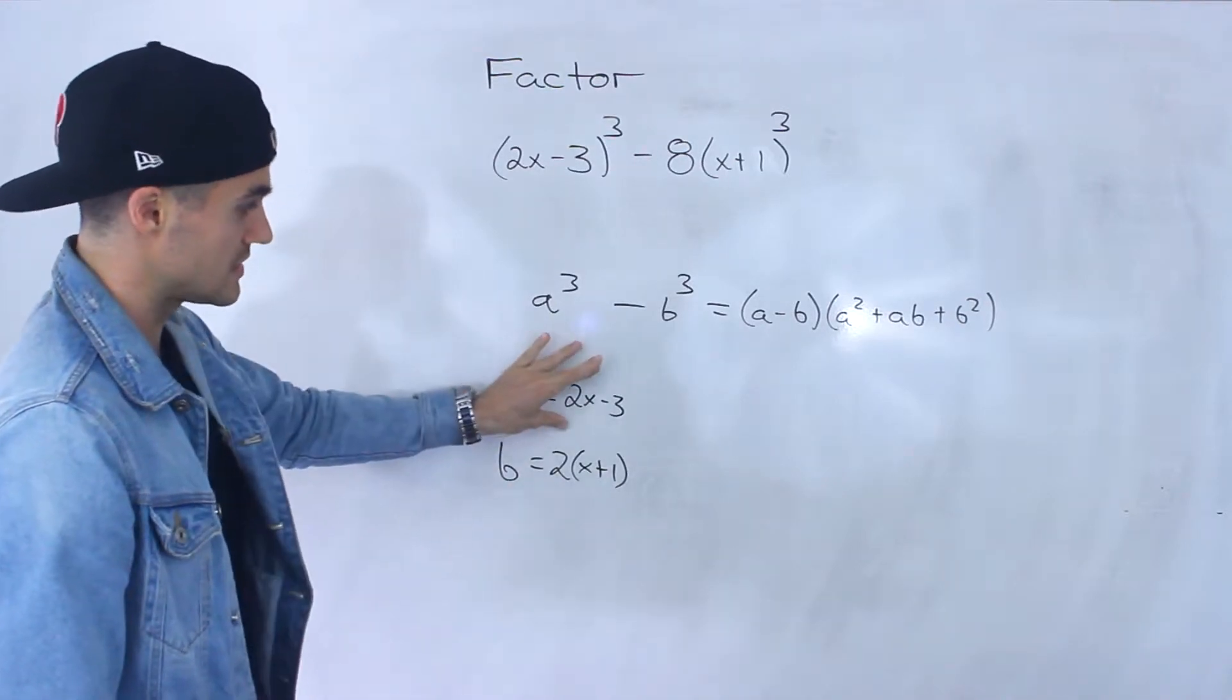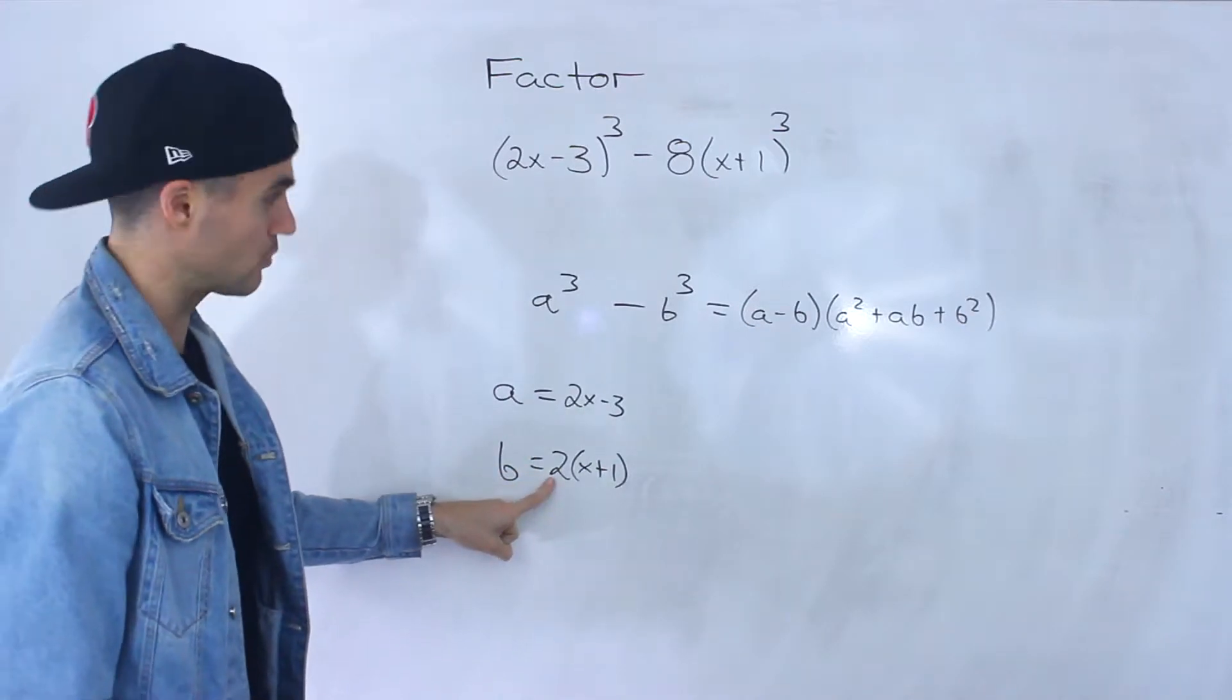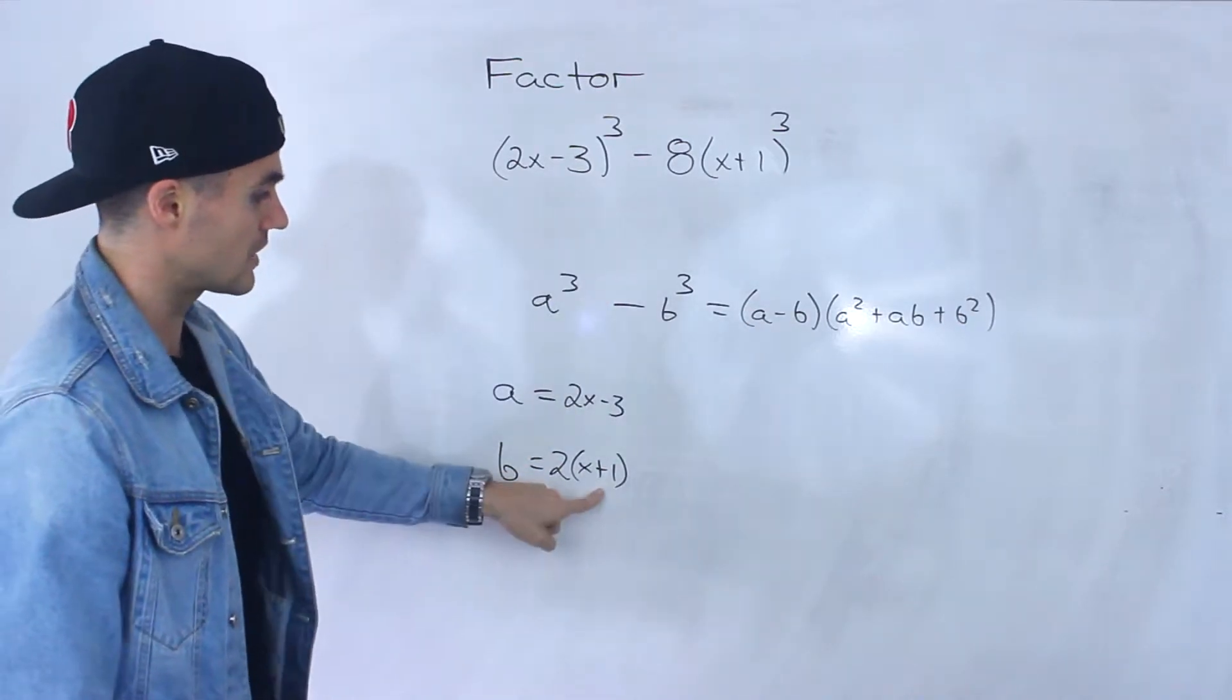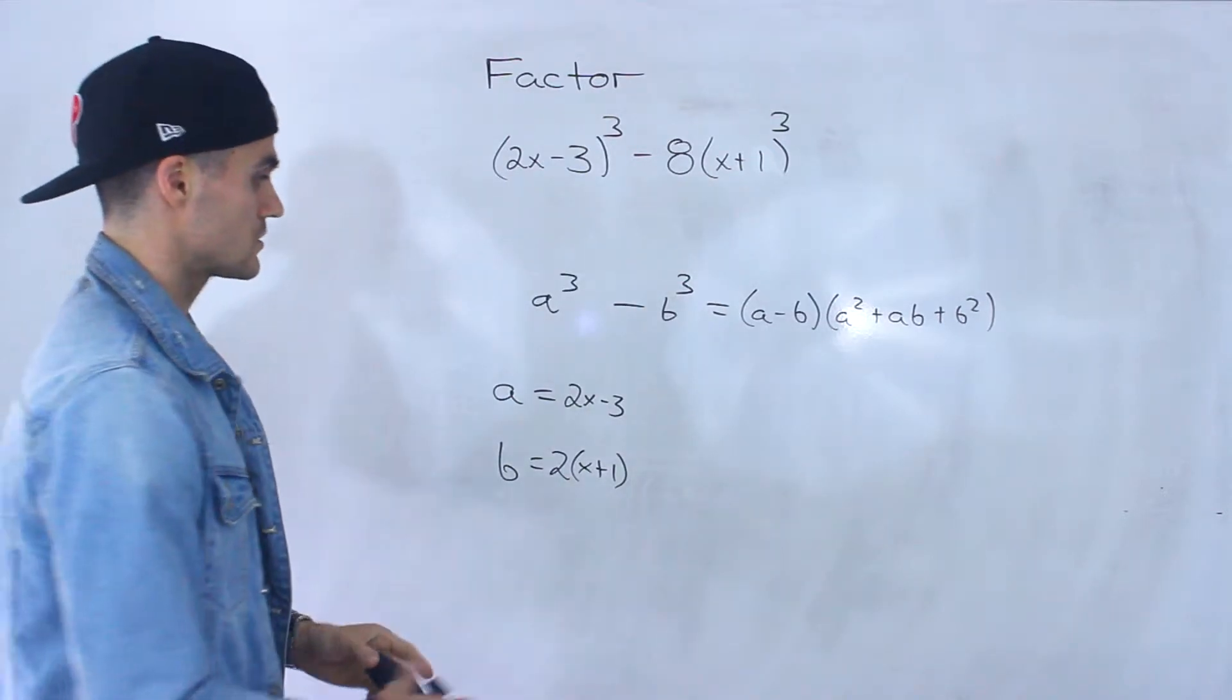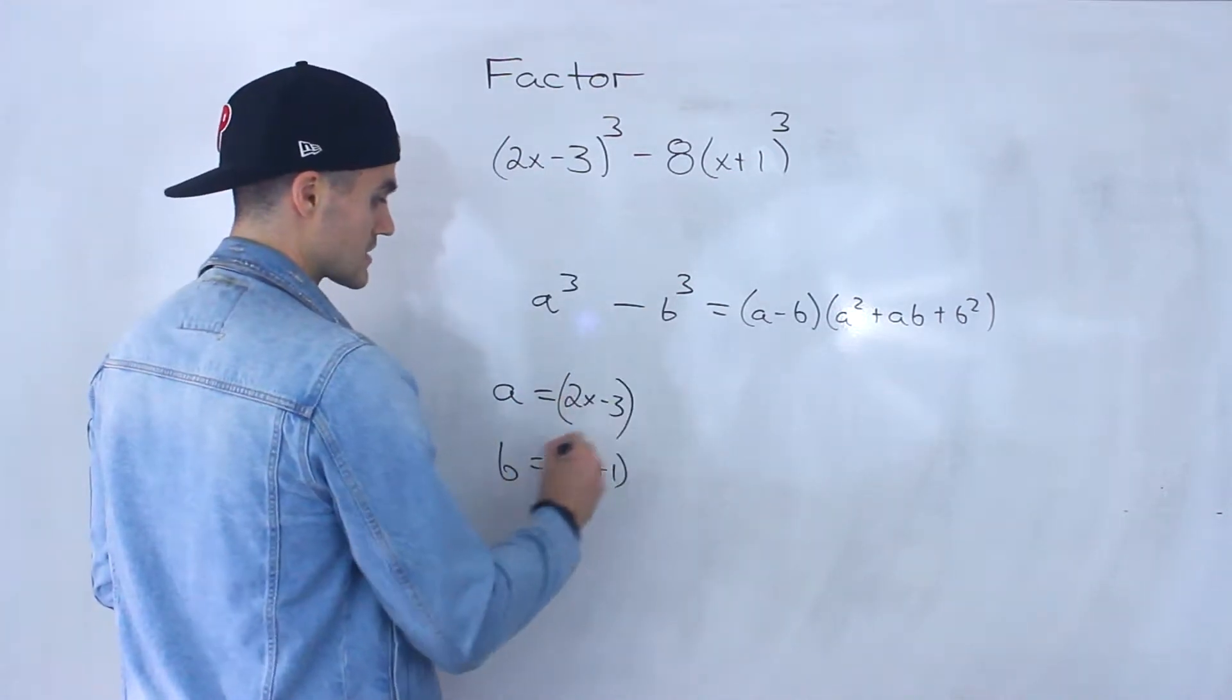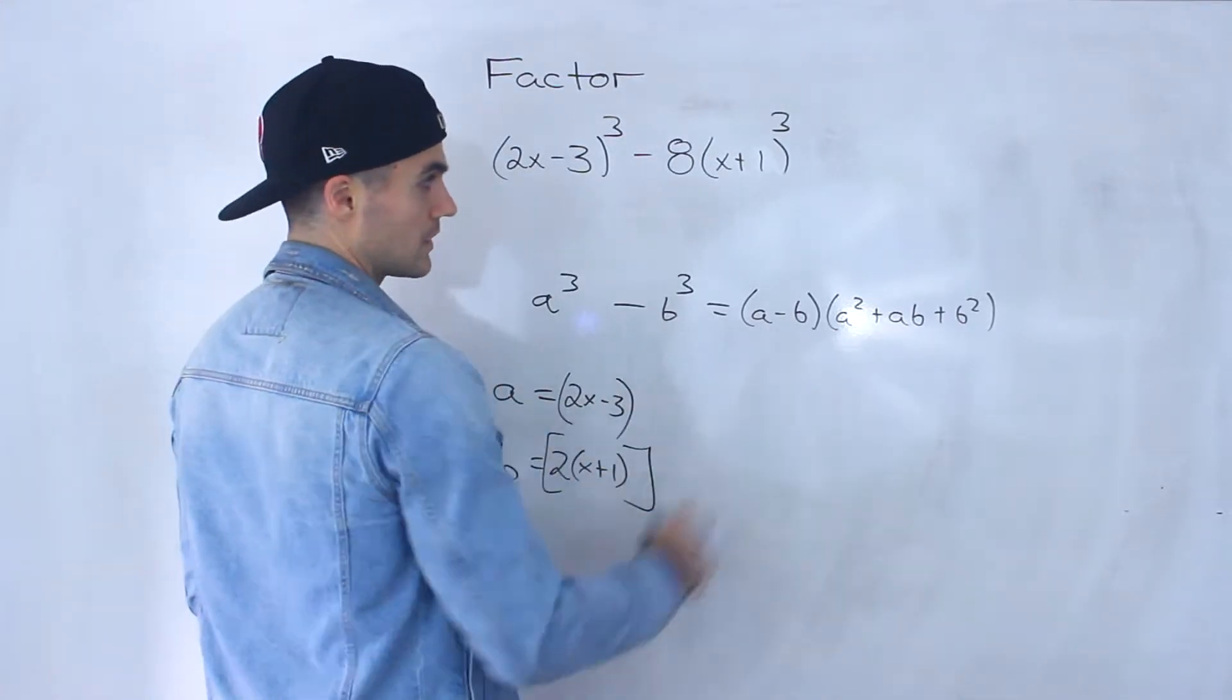And notice that this to the power of 3 is that. This whole thing to the power of 3, you would take the 2 to the power of 3, you'd get 8. Take (x+1) to the power of 3, you get (x+1)³. So now what we got to do is just take these expressions here for a and b and just sub them into that formula.